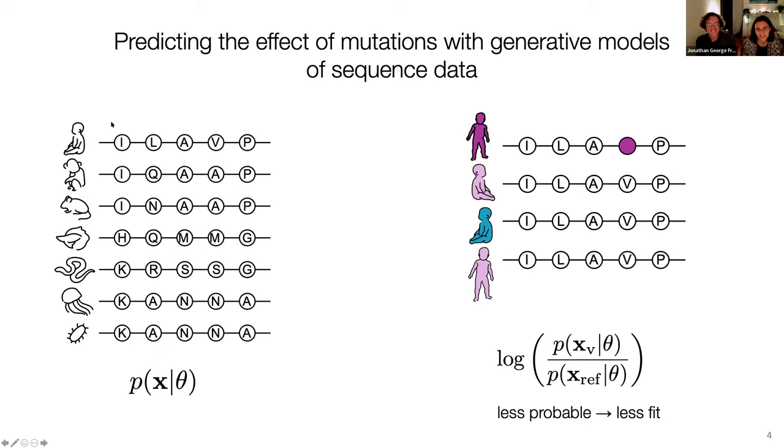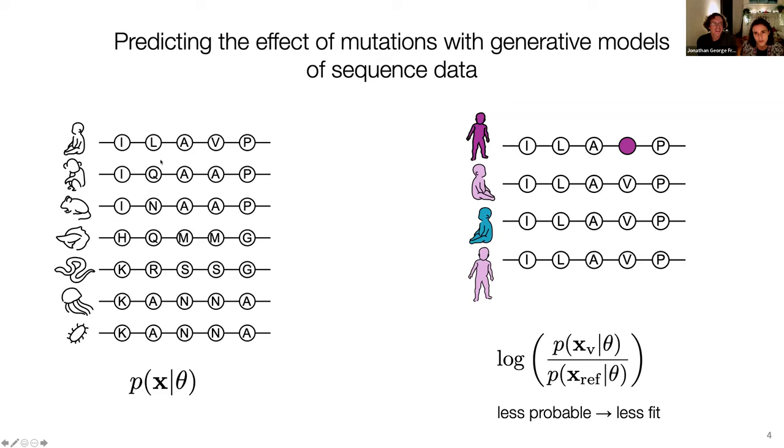So the idea is very simple. If we have sequences across different organisms, basically we're looking at constraints from evolution. And if we capture the distribution of the sequences, and this is exactly what we mean by generative model, a model that describes the distribution of sequences, here I have p of x, x is the sequence, and theta are just the parameters of the model.